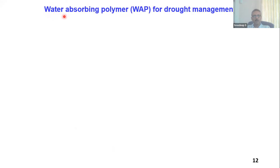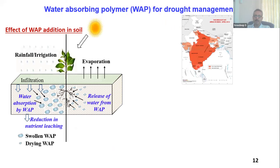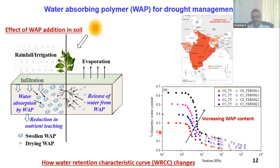The last part is the water absorbing polymer for drought management. A major portion of India is affected by drought at one point or another. The concept of soil amendment in terms of water absorbing polymer is that it absorbs water and becomes micro water reservoirs within the soil during rainfall or irrigation. During a dry spell, this water is released back into the root zone, which the plant can take. The advantage is it doesn't allow deep drainage and tries to store as much water within the porous system. You can see that the water retention increases with increasing water absorbing polymer content, showing an improvement in the water retention characteristic curve.